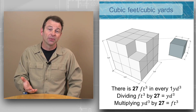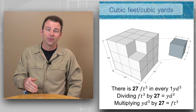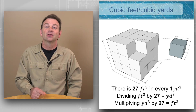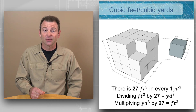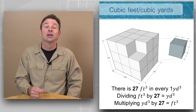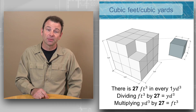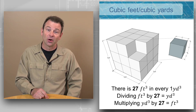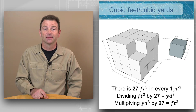Remember our cubic foot is one foot tall by one foot long by one foot wide. So we can do this by dividing our cubic feet by that factor of 27 to arrive at our cubic yards, or we can multiply our cubic yards by 27 to arrive at our cubic feet.